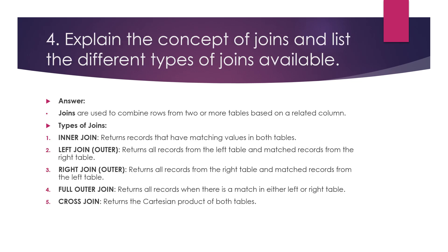The fourth question is also about SQL — explain the concept of joins and list the different types available. Joins are used to combine rows from two or more tables based on related columns. The types include: INNER JOIN, which returns records with matching values in both tables; LEFT JOIN, which returns all records from the left table and matched records from the right; RIGHT JOIN, which is opposite to LEFT JOIN; FULL OUTER JOIN; and CROSS JOIN.